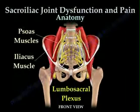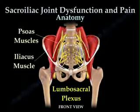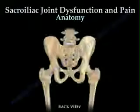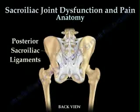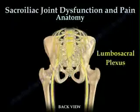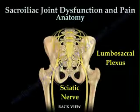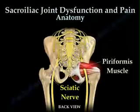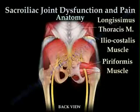Important nerves of the thigh and leg pass in front of the SI joints. From the back, the SI joint has strong posterior ligaments. The sciatic nerve crosses underneath the piriformis muscle. All of this is covered by strong back muscles.